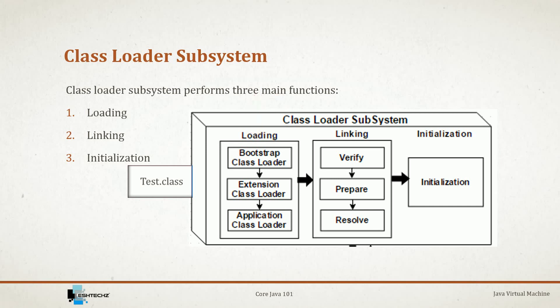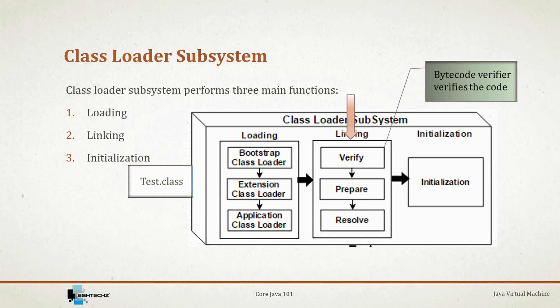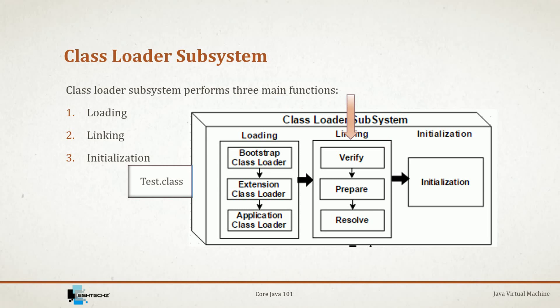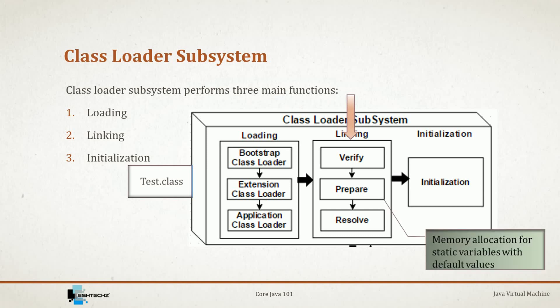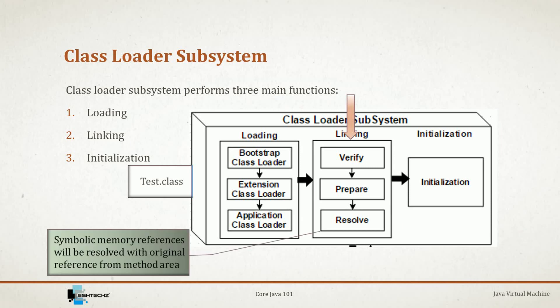The next phase is linking, which has three steps: verify, prepare, and resolve. In verify, the bytecode verifier checks the bytecode — if it fails, we get a verification error. In prepare, memory is allocated for all static variables with default values. In resolve, all symbolic memory references are replaced with original references from the method area.